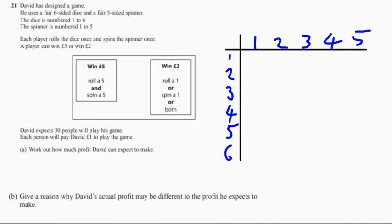So let's now think about when the player wins five pounds. Where do they win five pounds? Well they only win five pounds if they roll a five and spin a five. So I'm going to put a five in there.